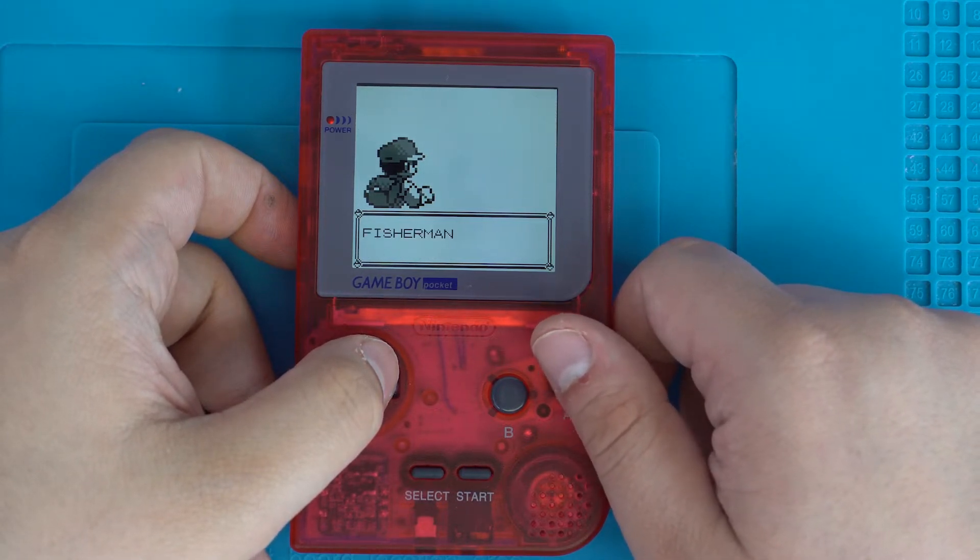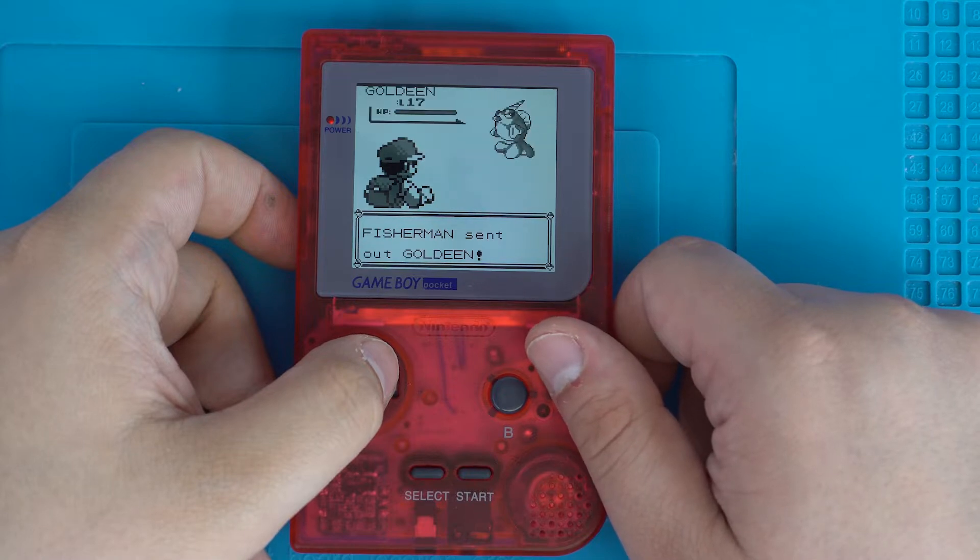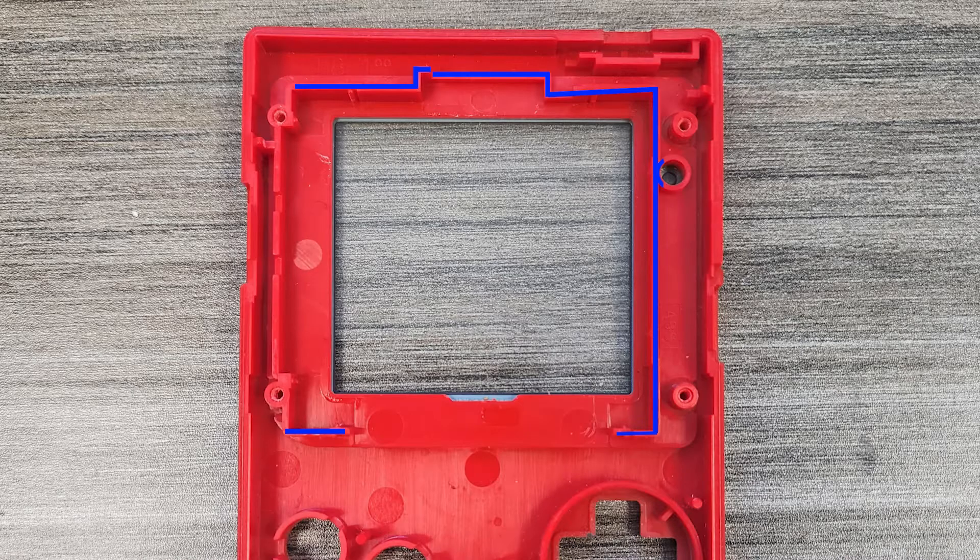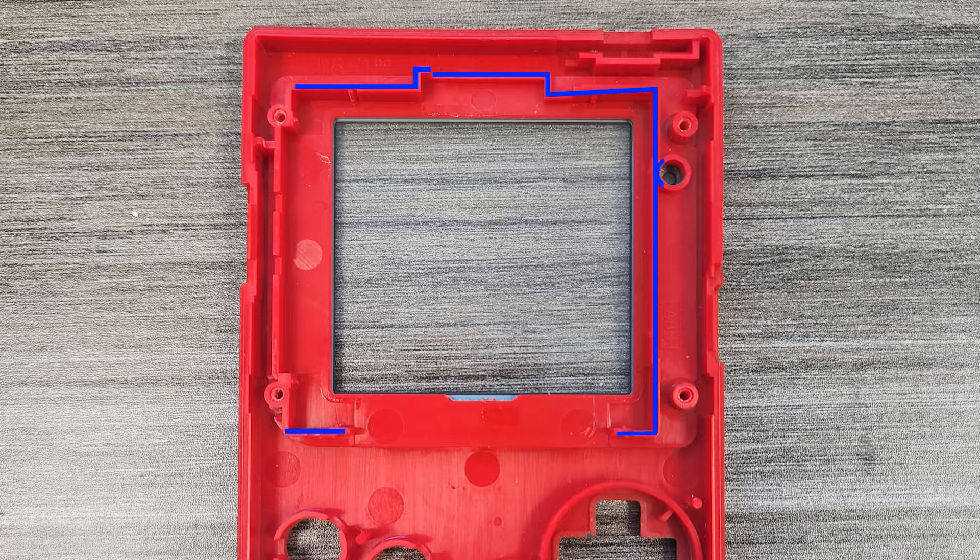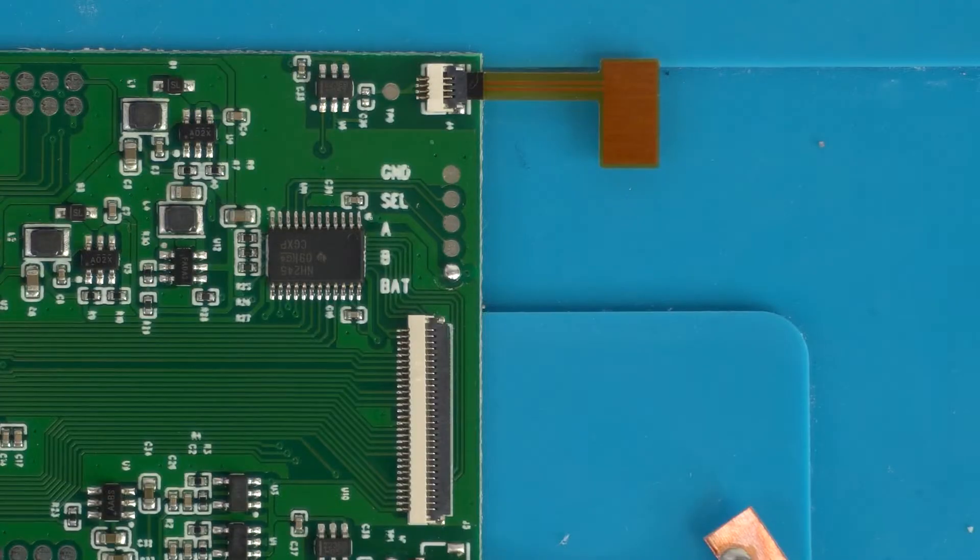For this video, I'll be using an IPS ready shell so I won't need to cut mine at all. If you're planning on doing this mod in an OAM shell, you'll need to cut back all the plastic that's highlighted in blue until it's flush with the rest. We recommend a pair of flush cutters for this. Take your time and constantly check the fit of the screen. You don't want to remove too much plastic to where the screen has room to wobble.